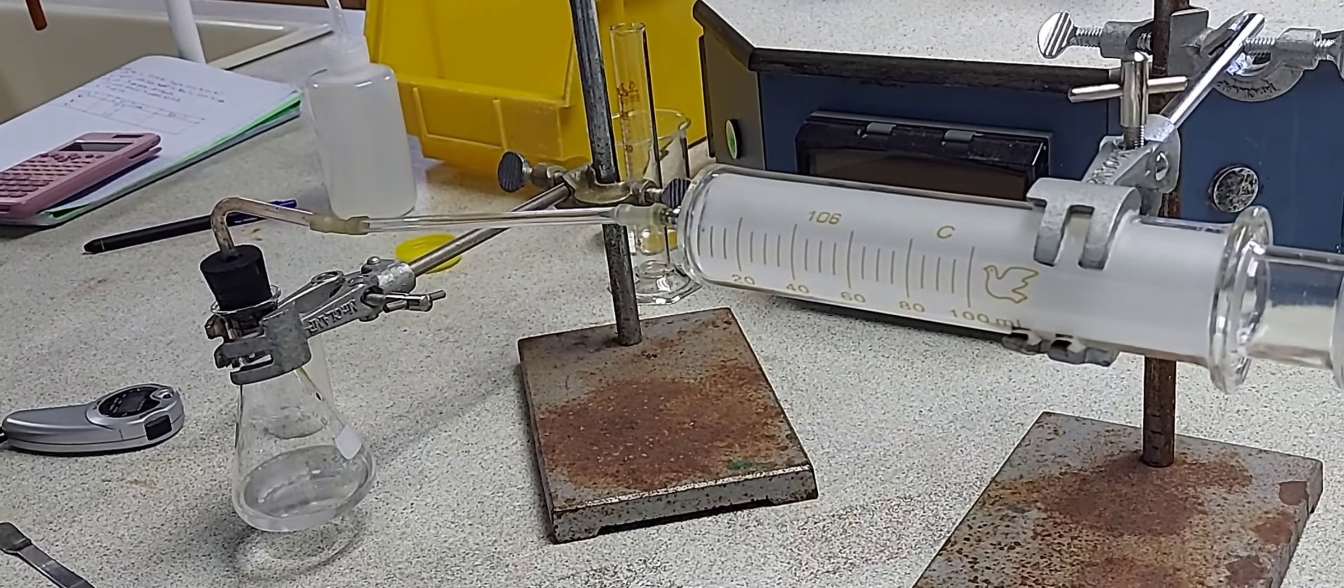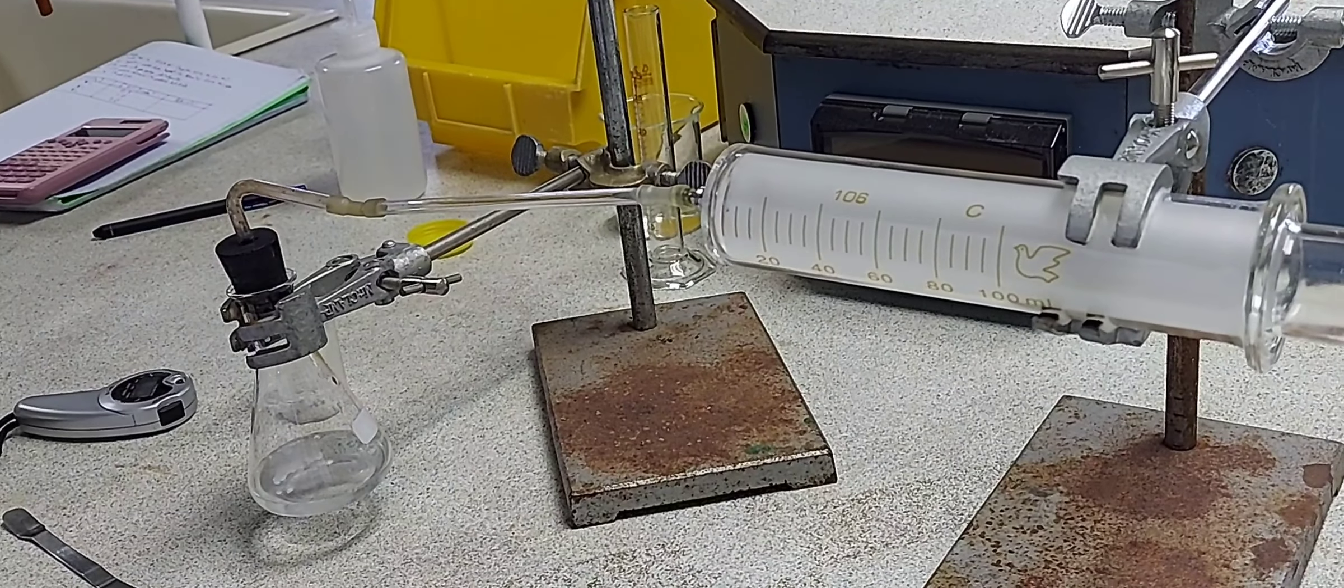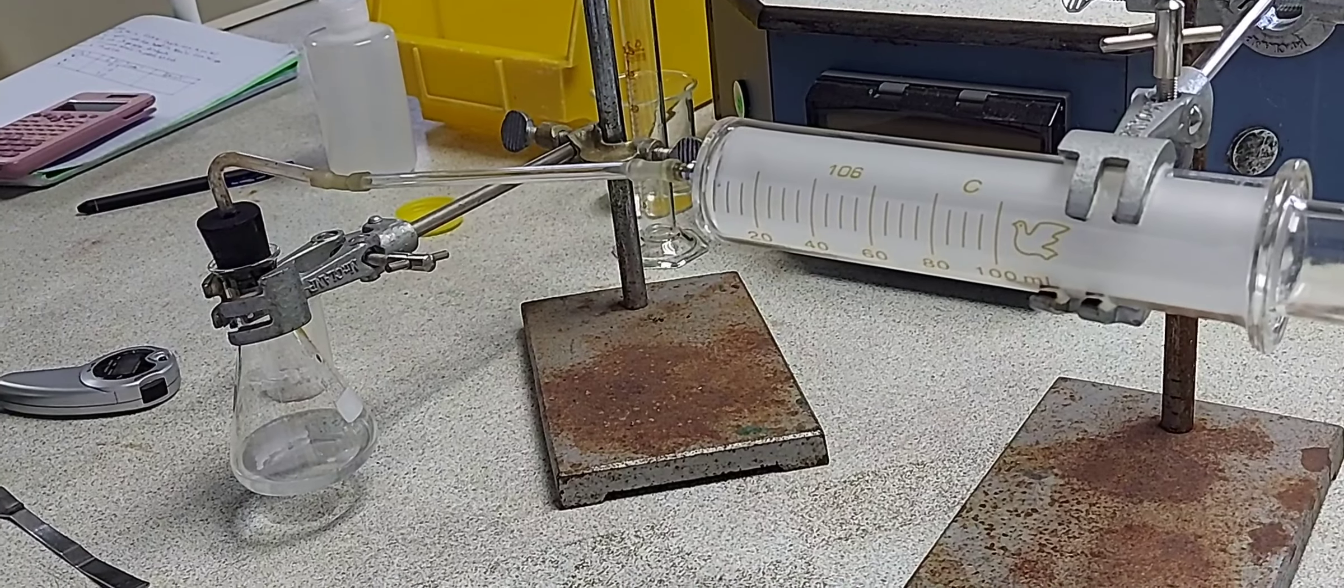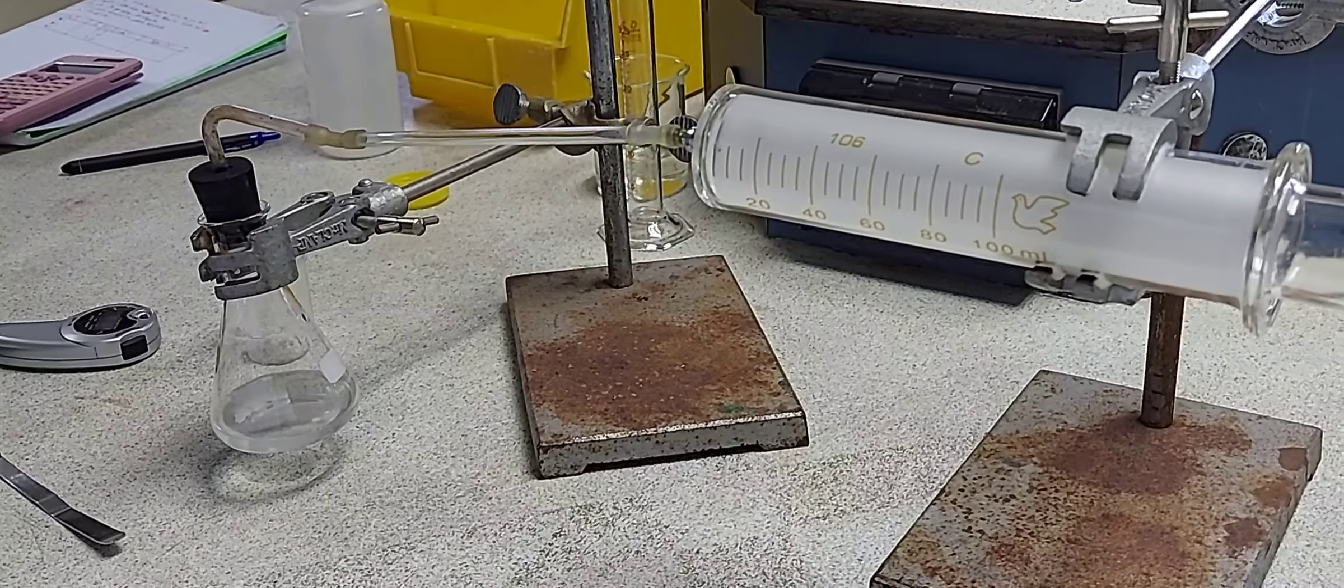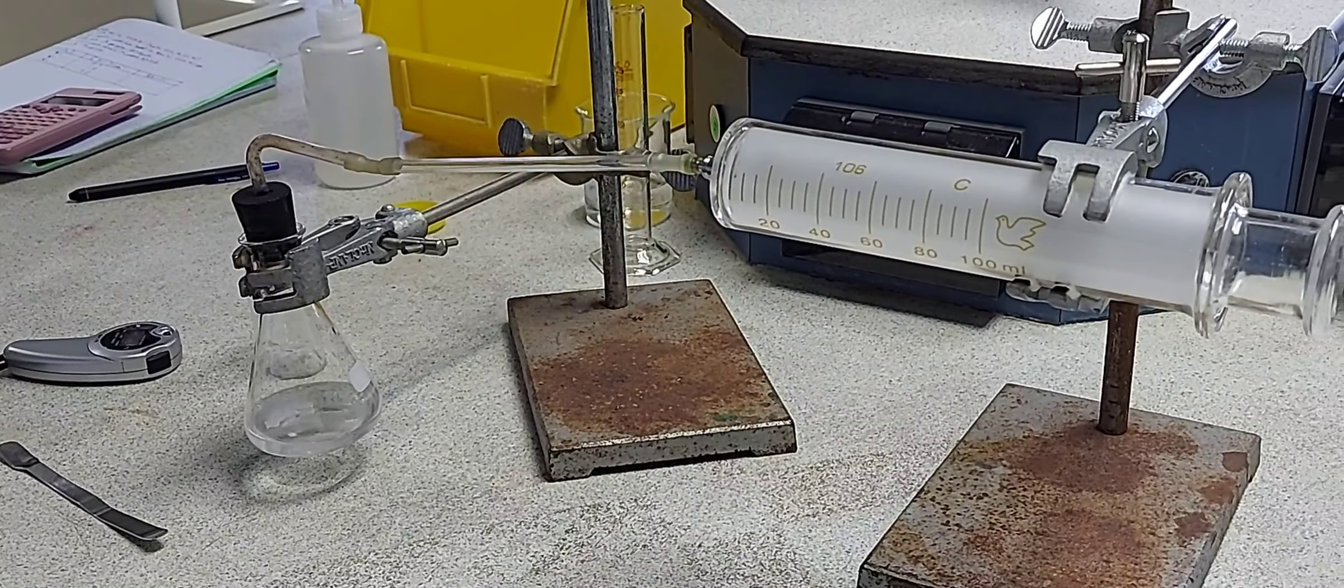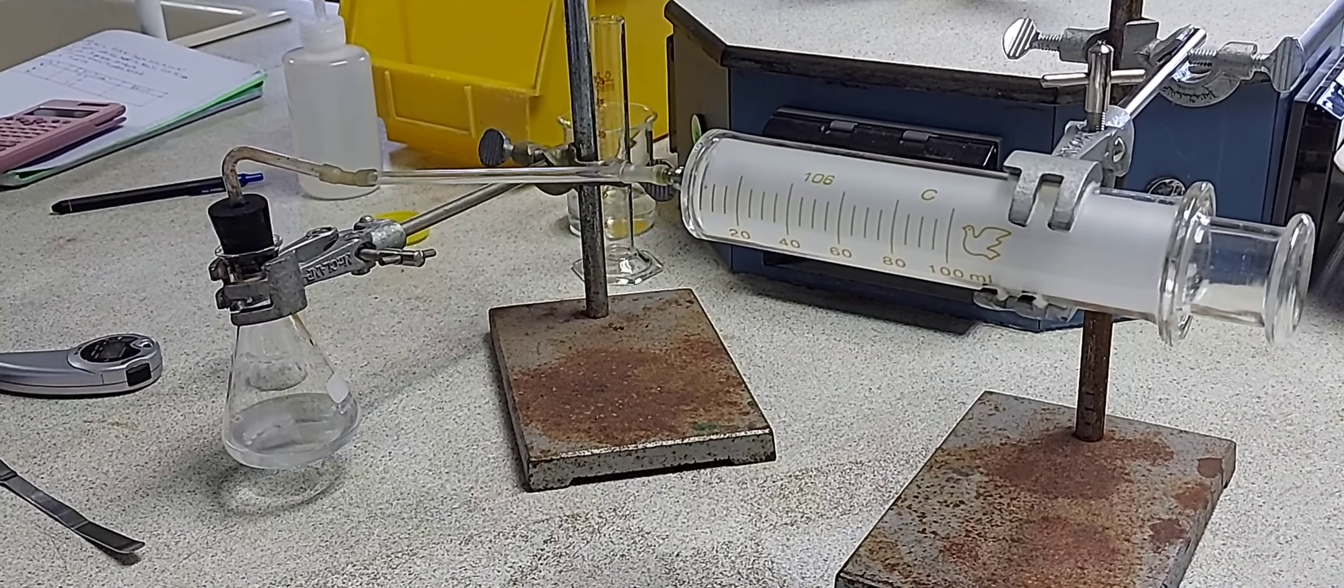Calcium carbonate will react with hydrochloric acid to give calcium chloride, carbon dioxide, and water. The gas given off, carbon dioxide, is collected in the gas syringe.